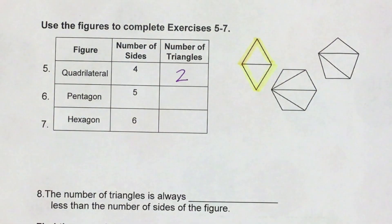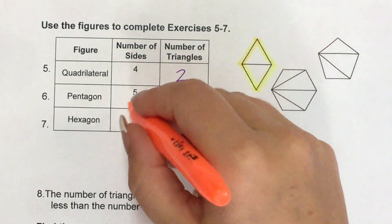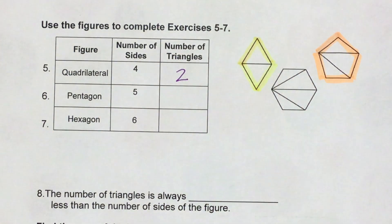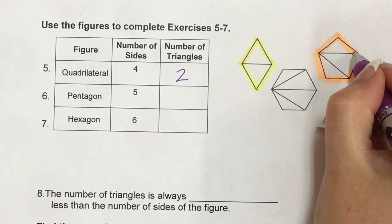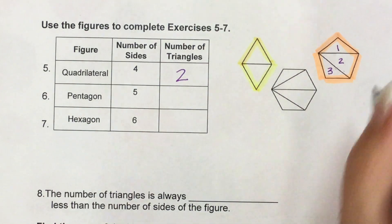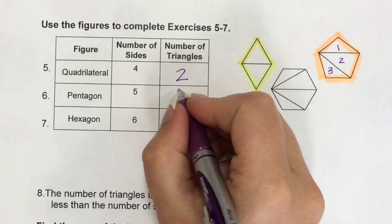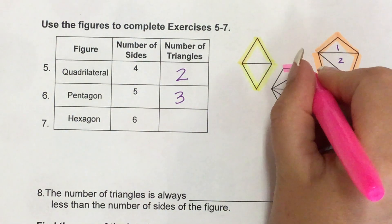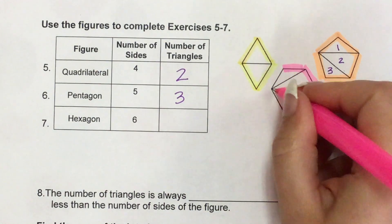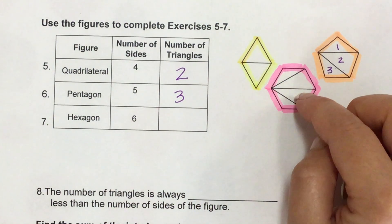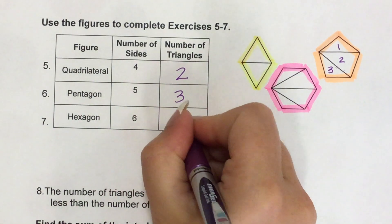Let's look at a pentagon. A pentagon is a five-sided figure — 1, 2, 3, 4, 5 sides. If you look in the pentagon, we can make one triangle here, another triangle here, and a third triangle here — so that would be three triangles. And then there's a hexagon. A hexagon is a six-sided figure — 1, 2, 3, 4, 5, 6. How many triangles are in a hexagon? There's 1, 2, 3, 4 — four triangles in a hexagon.